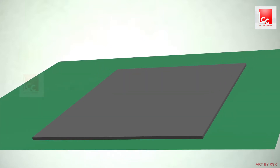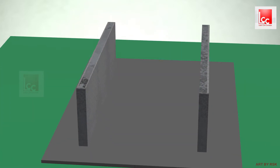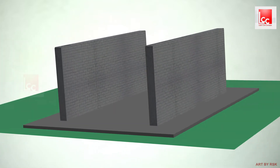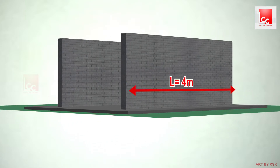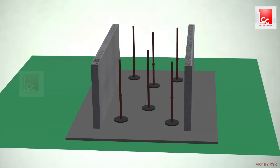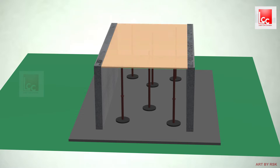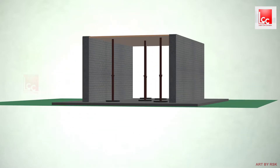Now we will learn how to construct a one-way slab. Consider a plane where a one-way slab is to be constructed. First, we will construct two brick walls having a length of four meters on opposite sides, as you can see in the model. Now we will provide the formwork required.